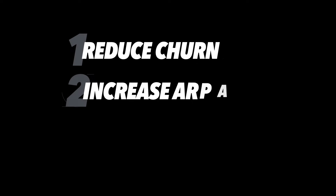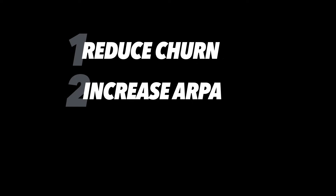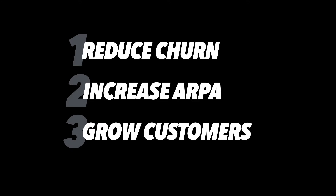Third, consider moving upmarket. Some of you have products that could sell to a bigger customer. By doing that, you may reduce the number of customers but you'll increase your average revenue per account because it's a bigger deal. Quick recap on how to use your growth ceiling for positive change: number one, reduce churn; number two, increase ARPA — average revenue per account; and number three, grow your customers.